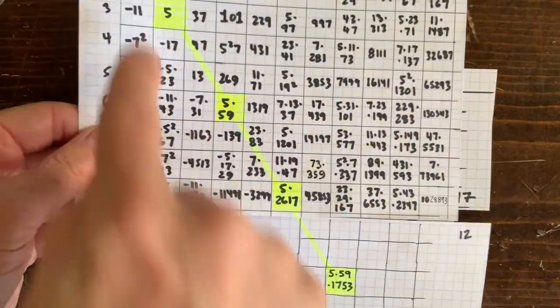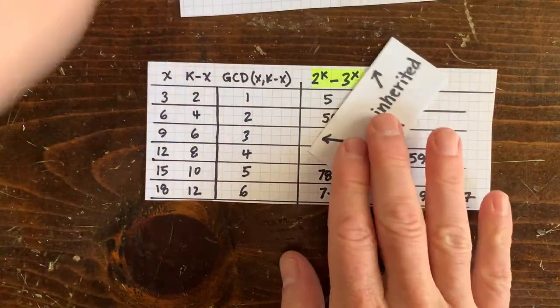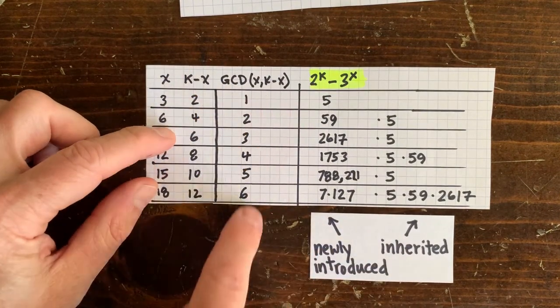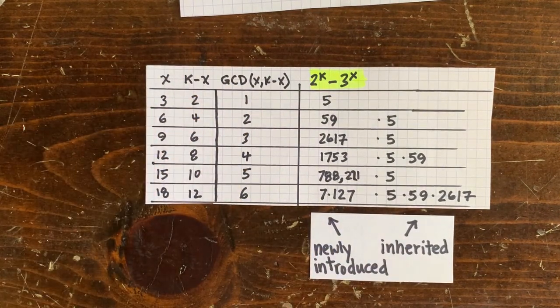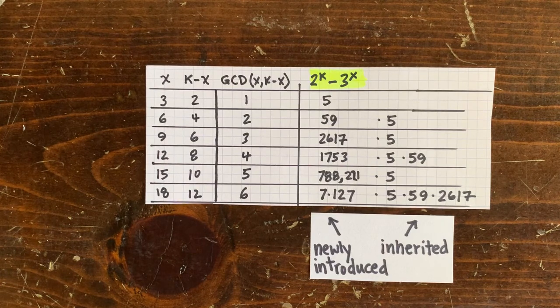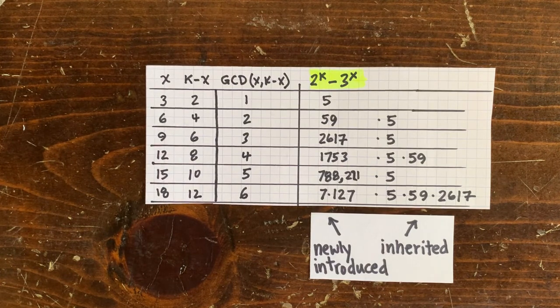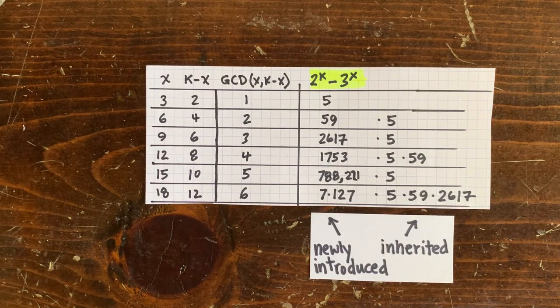...is the same as counting the multiplier from x equals 3, k minus x equals 2: 1, 2, 3, 4, 5, 6. So that's how we inherit factors for 2 to the k minus 3 to the x.